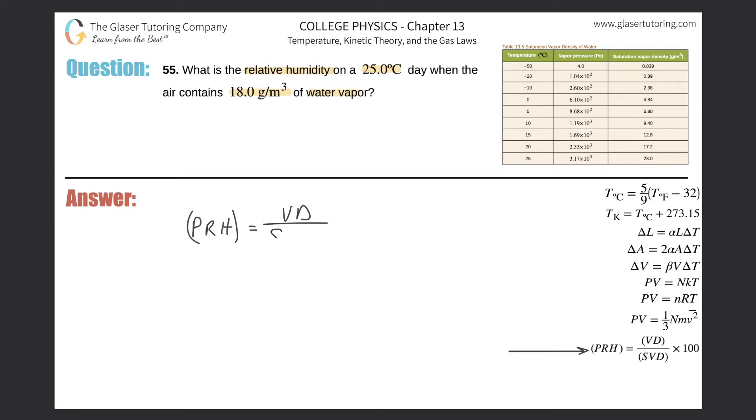will equal the vapor density of the water in the air, that's actually in the air, divided by the saturation vapor density of the water, multiplied by 100.